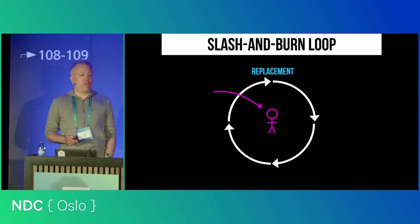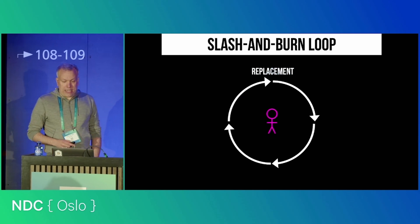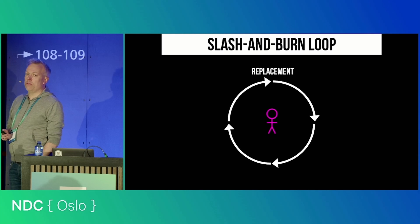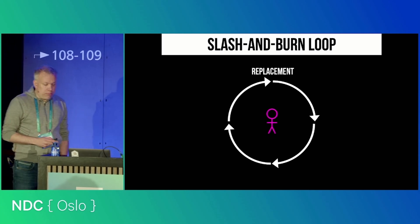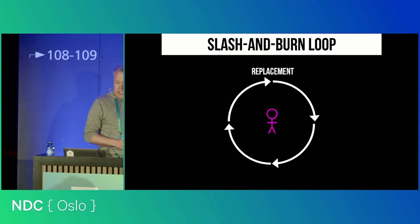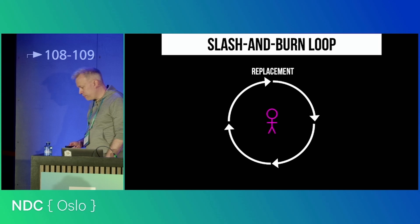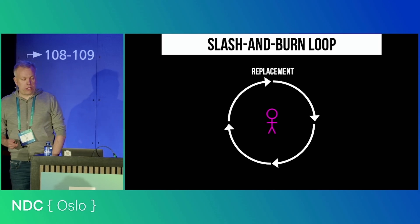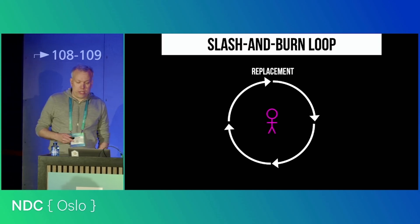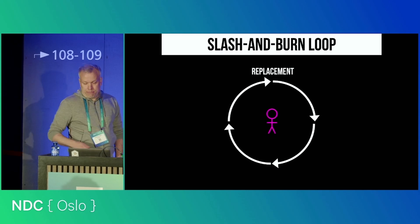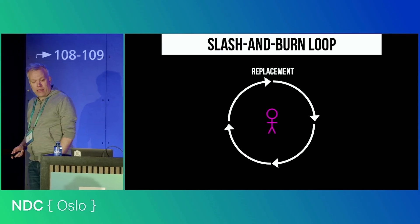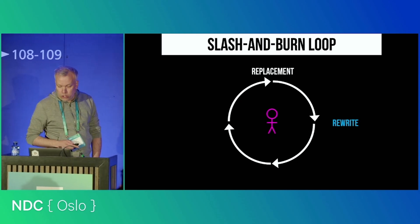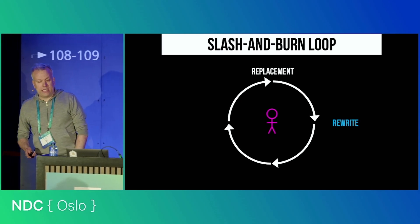What happens when you've replaced your tech lead is that the new tech lead immediately discovers that things are not well with the code. It is complicated, dirty, old-fashioned, and riddled with technical debt — all the bad words we can use to characterize code. It's practically impossible to understand anything, and you can't get anything done. And this triggers the second phase of the slash and burn loop, which is the big tech lead rewrite.